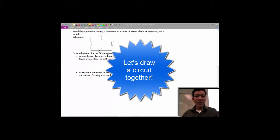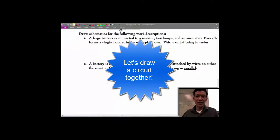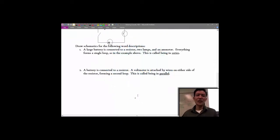In our first example, we have a large battery. It is connected to a resistor, two lamps, and an ammeter. Everything is connected to form a single loop, as in the example above. This is called being in series.